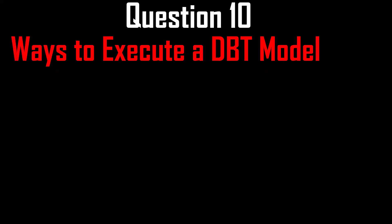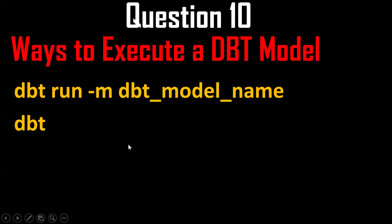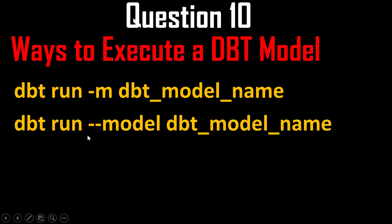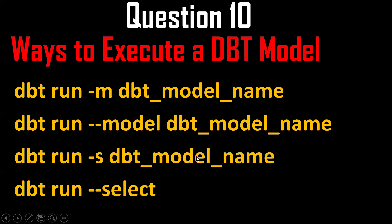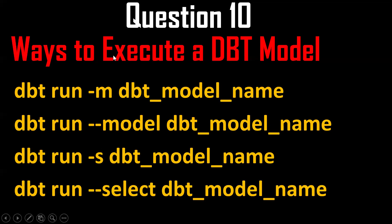The next question is: what are the various ways to execute a dbt model? There are many ways. One is 'dbt run -m model_name'. Similarly: 'dbt run --model model_name', 'dbt run -s model_name', and 'dbt run --select model_name'. All of these commands serve the same function.